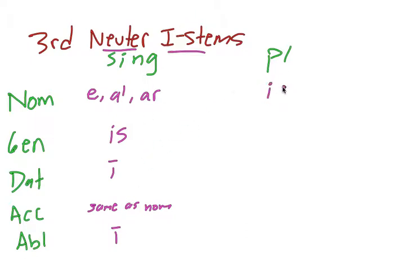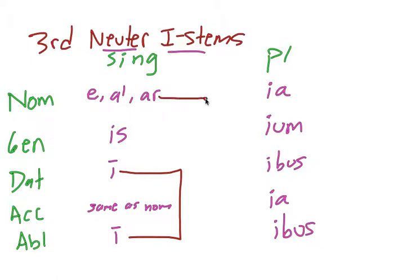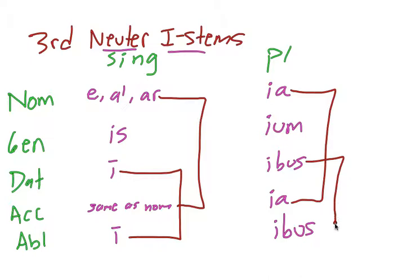In the plural, nominative is -ia. Genitive plural is -ium, just like regular masculine and feminine i-stems. Dative is -ibus, accusative -ia or same as nominative, and ablative -ibus. So making observations: in the singular, dative and ablative are the same; nominative and accusative are the same; and nominative plural and accusative plural are the same — for neuter i-stems.